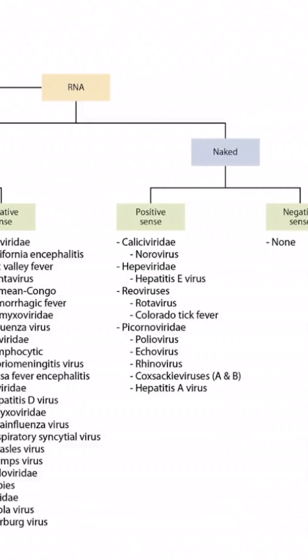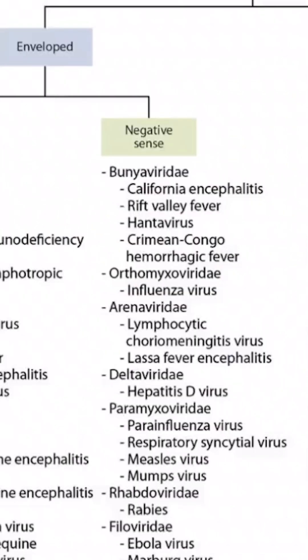This is our virus overview figure, and in this video we'll be discussing Rift Valley Fever and Crimean-Congo Hemorrhagic Fever. These are both bunya viruses, which you can see right here.